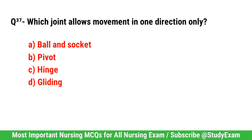Question number 37. Which joint allows movement in one direction only? Correct option is C. Hinge.